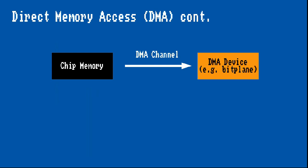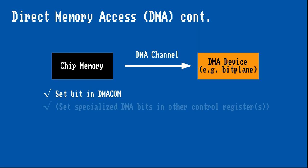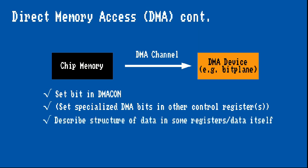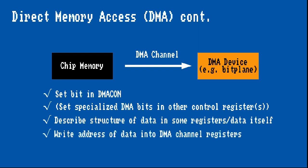To take advantage of DMA for a custom hardware feature, there is a general pattern. We have to set the appropriate bit in the DMACON register to enable the type of DMA feature we want. A number of features also require enabling or disabling sub-features, such as the bitplanes we want to use. We also have to describe the structure of the data through register values or in the data itself, such as for sprites or copper lists. Finally, we specify the location of the data by writing its address to dedicated registers, which have high and low word pairs since all registers are 16 bits.